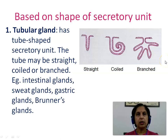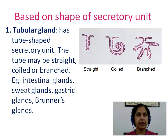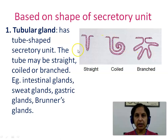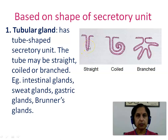Based on the shape of the secretory unit, we can have three types of glands. The first is the tubular gland, which has a tube-shaped secretory unit. The tube may be straight, coiled, or branched. Examples are intestinal glands, sweat glands, gastric glands, and Brunner's glands. As seen in the diagram, the secretory unit is like a tube — straight, coiled, or branched.